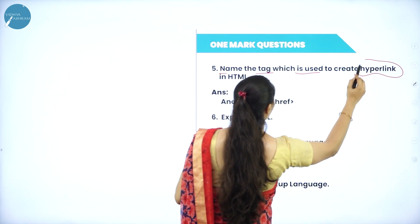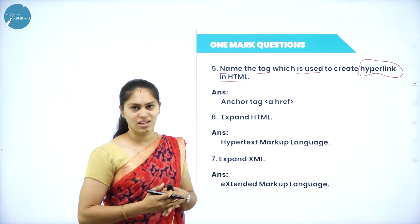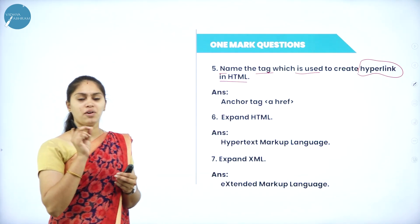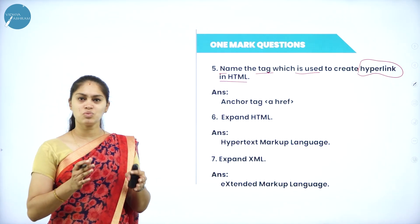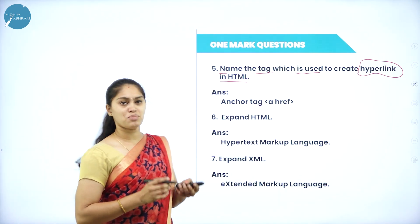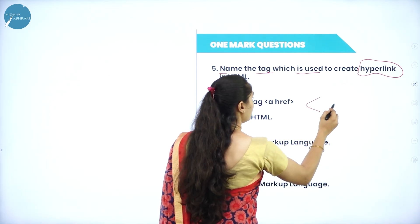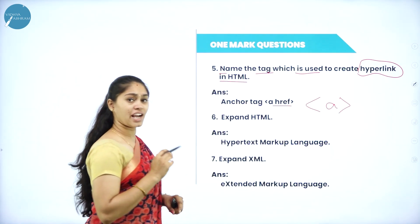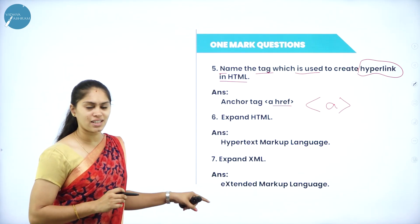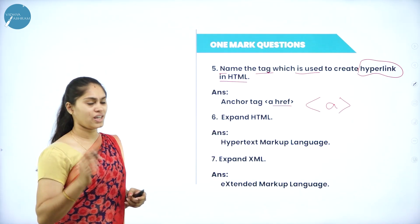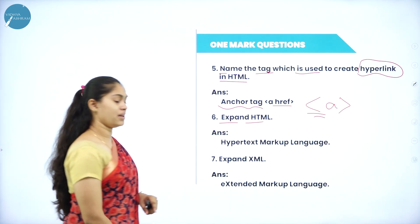Next question: name the tag used to create a hyperlink in HTML. You are all familiar with browsing - when you see a word in blue color with an underline and clicking it takes you to another web page, that is a hyperlink. The tag used to create a hyperlink in HTML is the anchor tag, written as 'a' in angular brackets. The attribute used is href (hyperreference), and you provide the link of that particular web page.